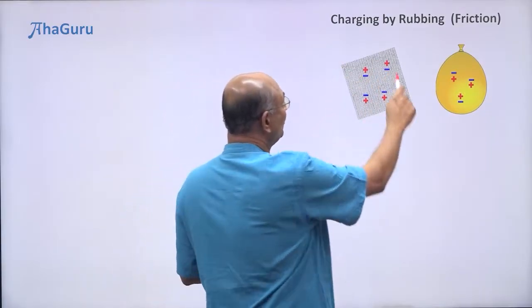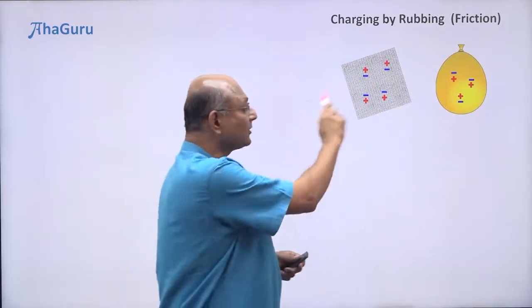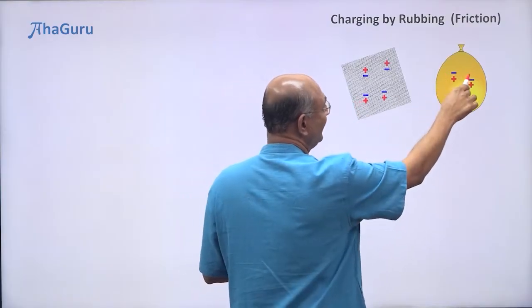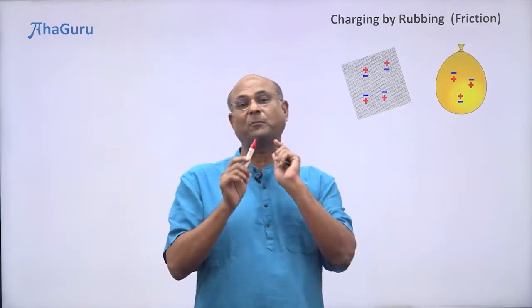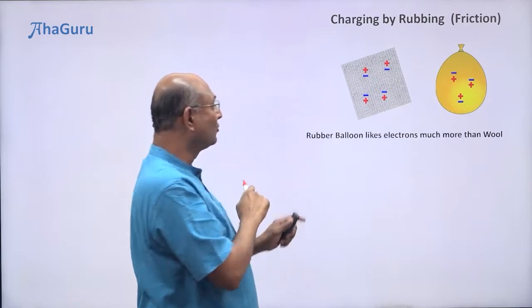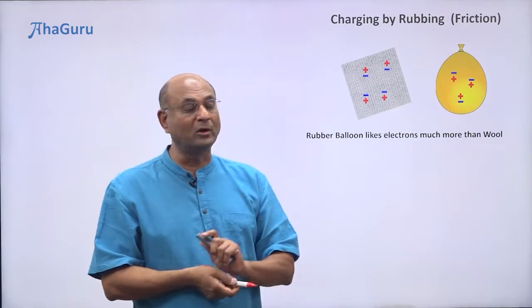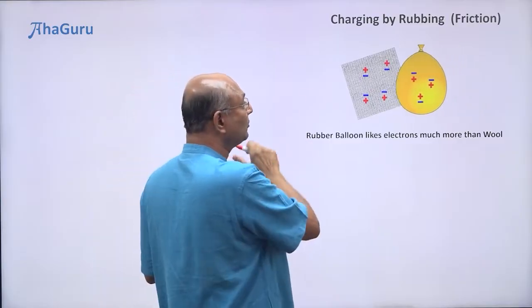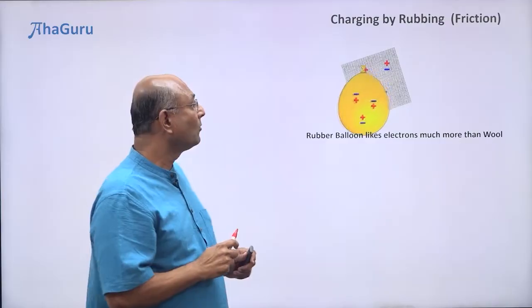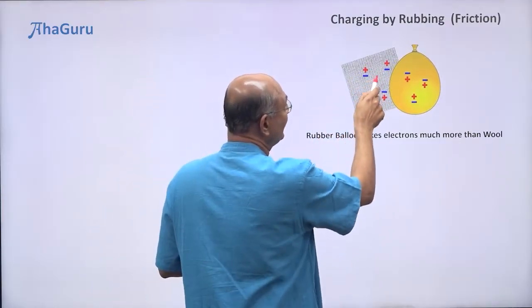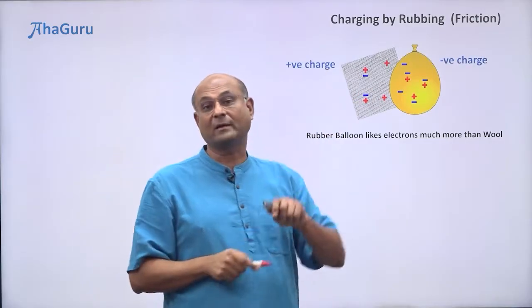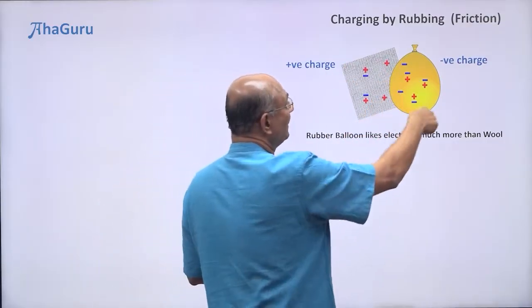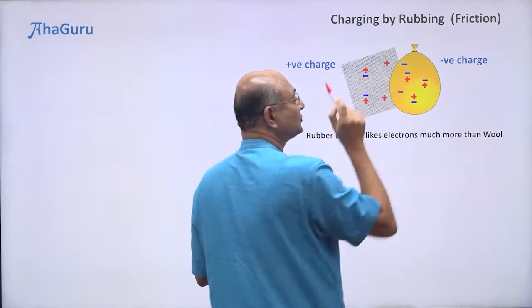Here I have a woolen cloth and a rubber balloon — both of these are neutral. Every atom has a positive and negative charge in equal amounts. But the rubber balloon likes electrons much more than wool. So the atoms in the rubber balloon like the electrons more than the atoms in wool. If I now take the rubber balloon and rub it all over the woolen cloth, some of these electrons will jump from the woolen cloth to the rubber balloon. So wool has lost electrons and has become positively charged, whereas the rubber balloon has gained extra electrons and has become negatively charged.